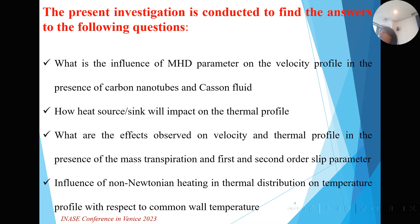This is the present investigation for our work. We examine the influence of the MHD parameter on the velocity profile in the presence of carbon nanotubes and Casson fluid, and how the heat source and sink parameter affects the thermal profile. We observe effects in the velocity and thermal profile in the presence of mass transpiration, first and second order slip with temperature jump, and non-Newtonian heating in the thermal distribution with respect to common wall temperature.